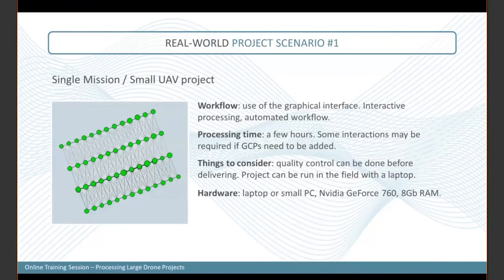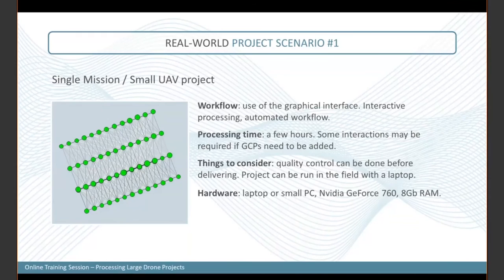Now for some case studies. For smaller projects — below a thousand images — the project can be run from the GUI interface. Processing time is typically below one day: flown in the morning, processed in the afternoon, and ready to deliver by end of day. A few interactions are required if ground control points are used. Since it's a smaller project, all QC can be done at the AT stage and at the end, and it can be run on a smaller laptop.